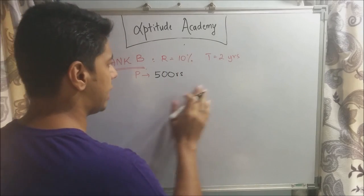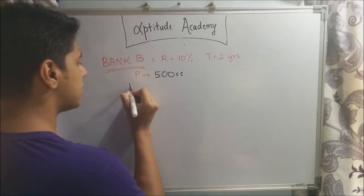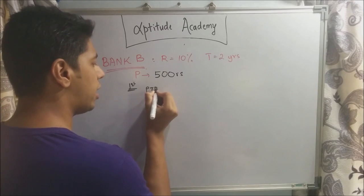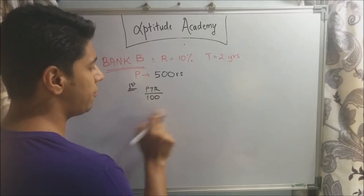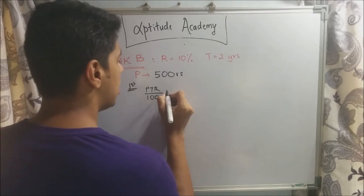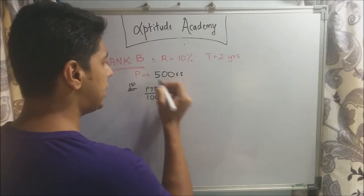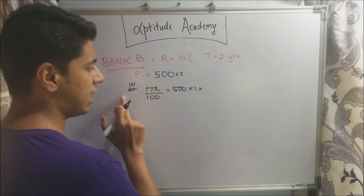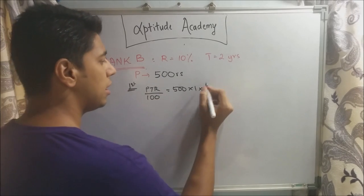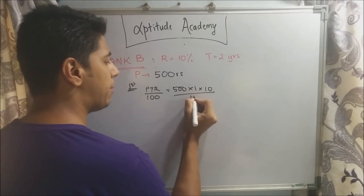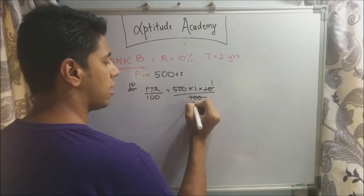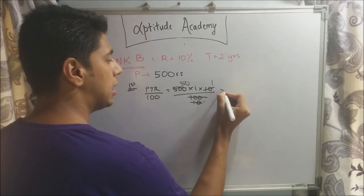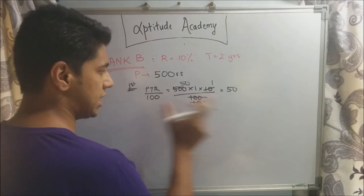Let's calculate one year at a time. The interest after one year will be PTR upon 100 — the same formula used for simple interest. The principal is 500 rupees, time is one year, and rate is 10 ÷ 100, so the interest after the first year is 50 rupees.